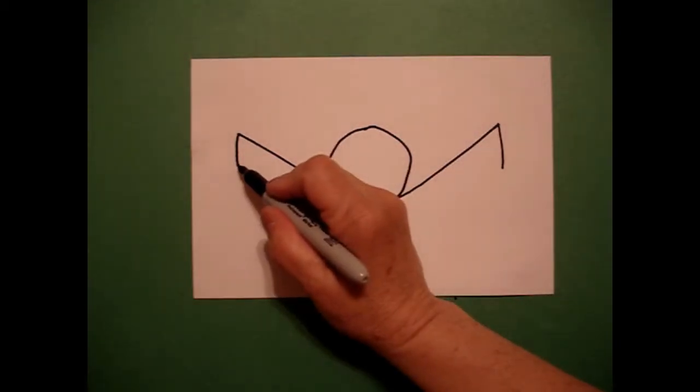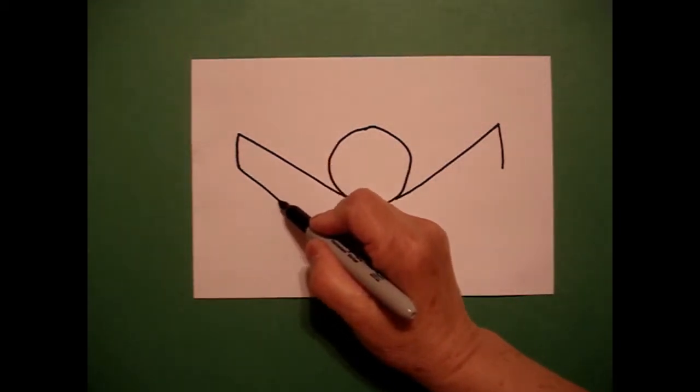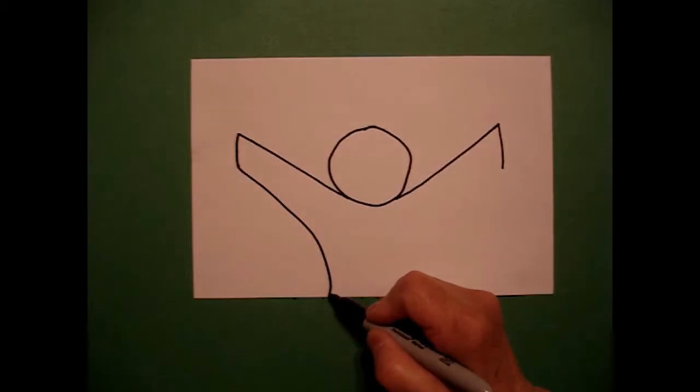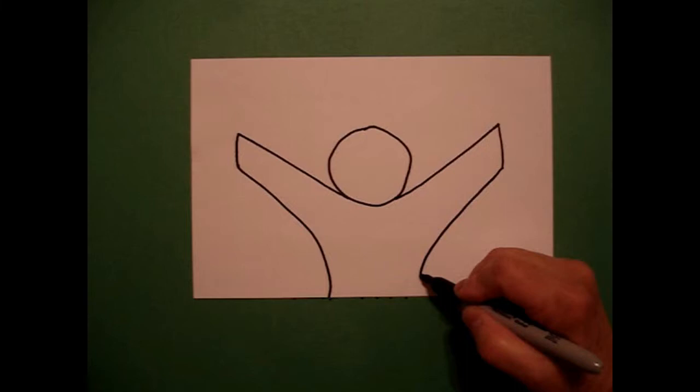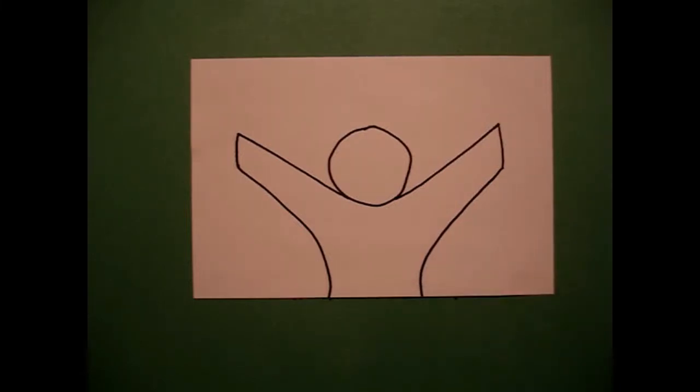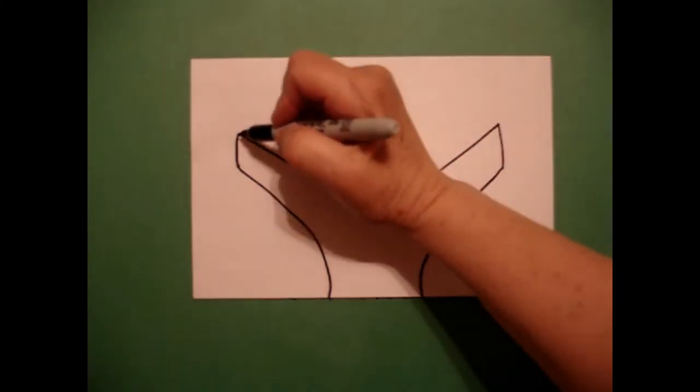Now I come back to the left and draw a slightly curved line down off the page on the left and a slightly curved line down off the page on the right. I come up to the left and draw a curved line.